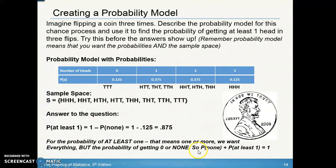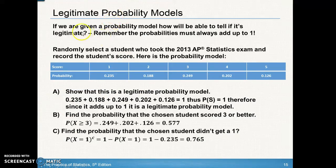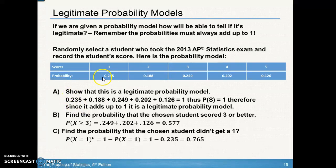Get used to this: anytime you need 'at least one,' always do one minus the probability of none — it's much easier. The probability of none plus the probability of at least one gives you one, which is why you can use that formula. Now, if given a probability model, to check if it's legitimate, add the sum of all probabilities — they must equal one. For example, a student's AP Statistics score from one to five: add up all the probabilities and if they sum to one, it's legitimate.